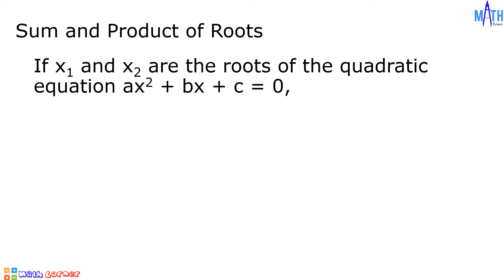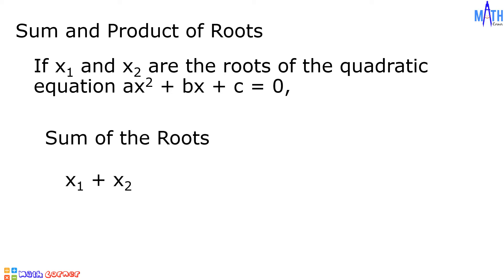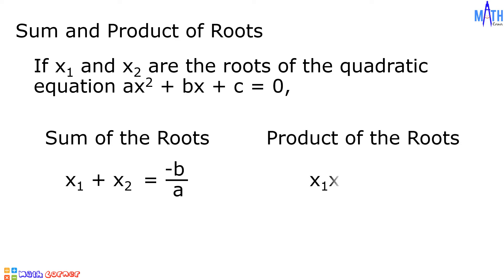If x₁ and x₂ are the roots of the quadratic equation ax² + bx + c = 0, the sum of the roots x₁ + x₂ is equal to negative b over a. The product of the roots x₁ × x₂ is equal to c over a.